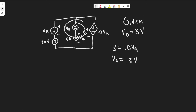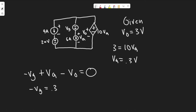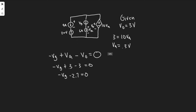Using the passive sign convention — when we enter a side, that's the sign we use — since we enter the negative side first, we have minus Vg. Then we enter the positive side of VA, so plus VA. Then we enter the minus side of V sub 0, so minus V sub 0. Setting the sum equal to zero: minus Vg plus 0.3 minus 3 equals 0, giving minus Vg equals 2.7, so Vg equals 2.7 volts.